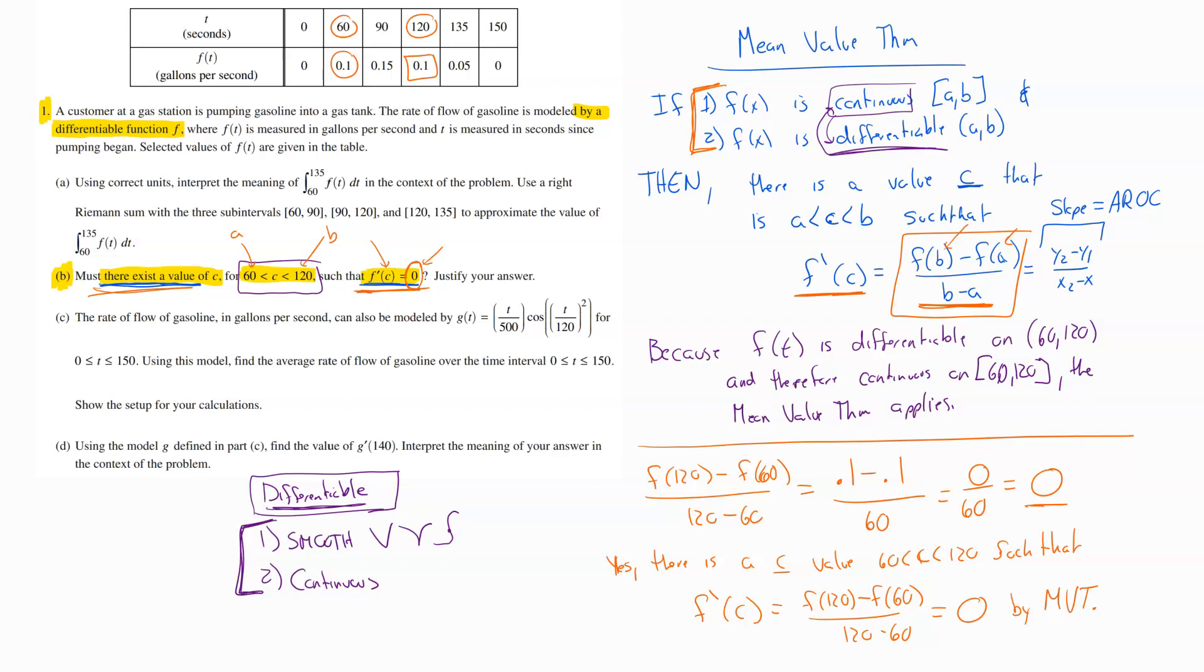So again, the telltale sign on these types of problems is when they're talking to you about must there be this value without actually asking you what the value is. And then when they want you to show that the derivative equals something, that's going to be this mean value theorem process. You have to tell them that you're allowed to use it by fulfilling those two requirements and then show them that the conclusion that you're looking for is what those endpoints' average rate of change will equal.